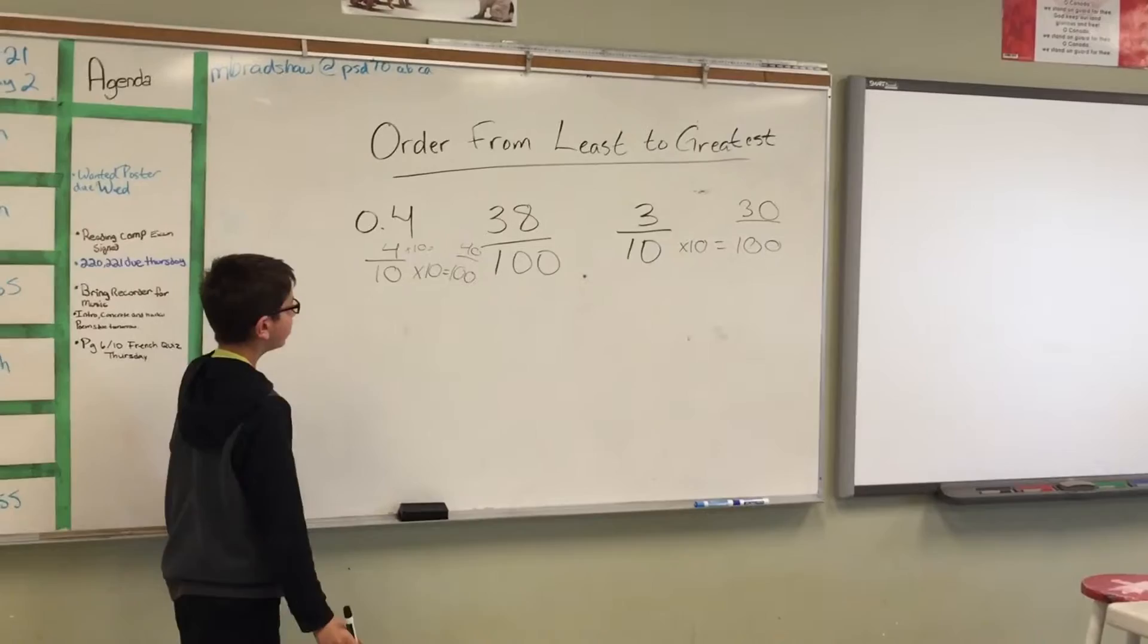So least to greatest is 30 over 100, 38 over 100, and 4 over 100. Looks good. Yeah.